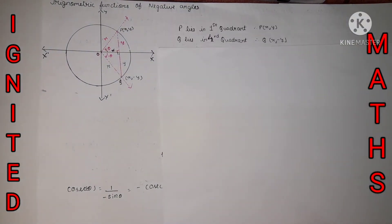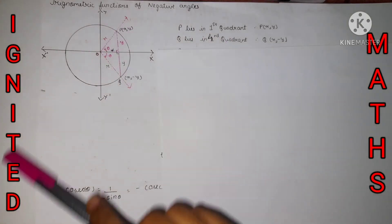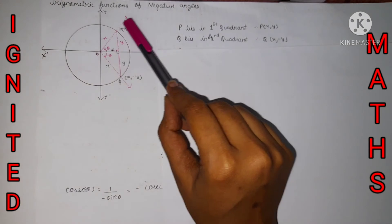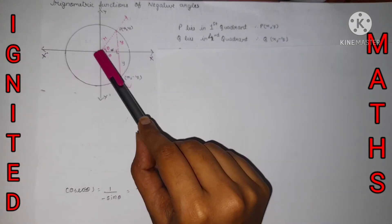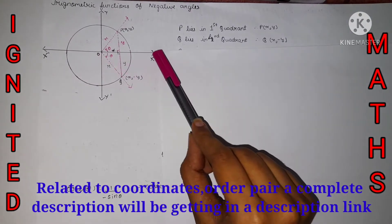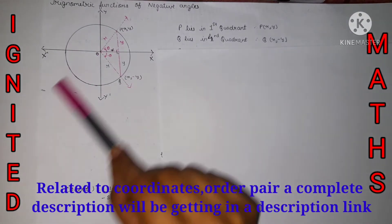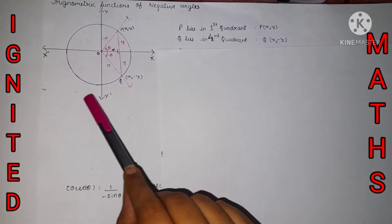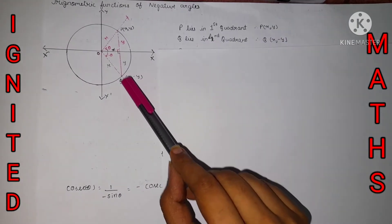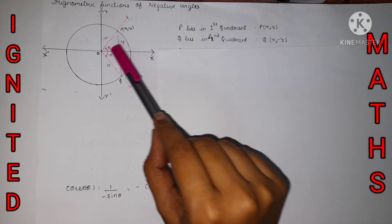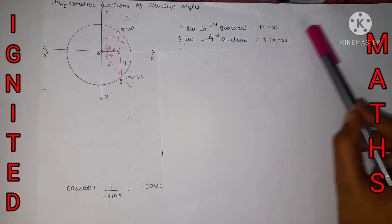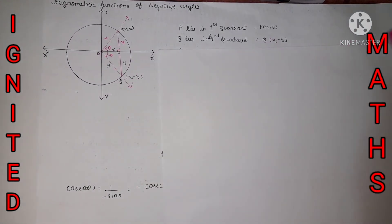Point P lies in the first quadrant, where both the x-coordinate and y-coordinate are positive, so P has coordinates (x, y). At point Q in the fourth quadrant, the x-coordinate is positive but the y-coordinate is negative, so Q has coordinates (x, -y).